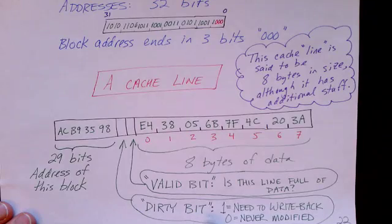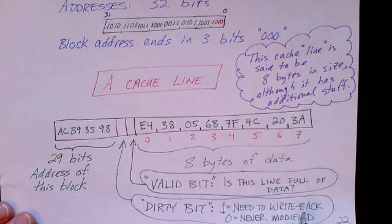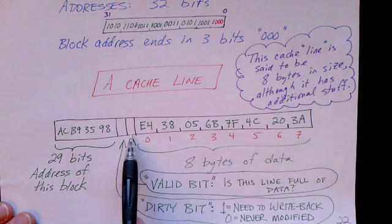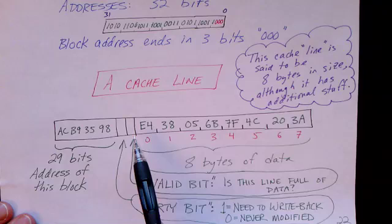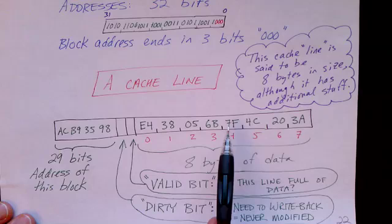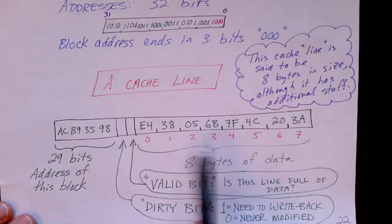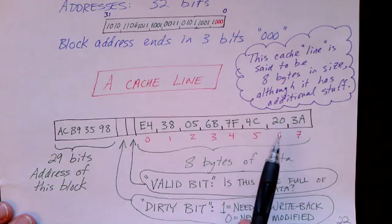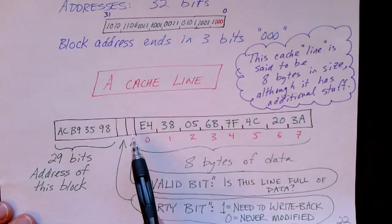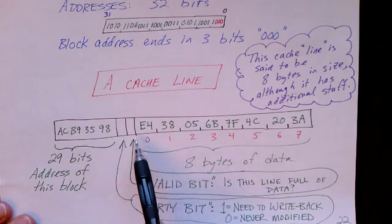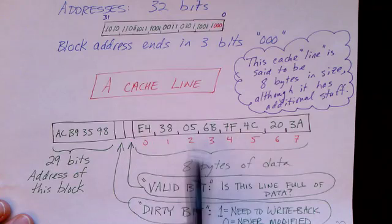We've also got the dirty bit: if it's 1, the block is dirty — it's been modified and needs to be written back to memory at some future time. If it's 0, it has never been modified so we don't need to write it back. There's also another bit called the valid bit — is this line full of valid data? In certain situations, such as when the computer first powers up, all cache memory will have random unpredictable values. By setting the valid bit to indicate this is not a valid block of data, we can avoid using it and force the system to load the block from memory.